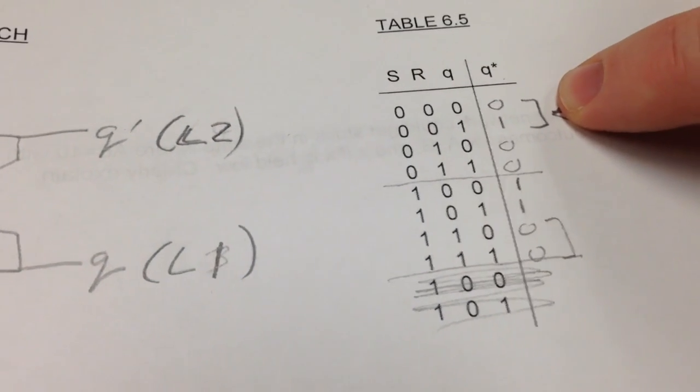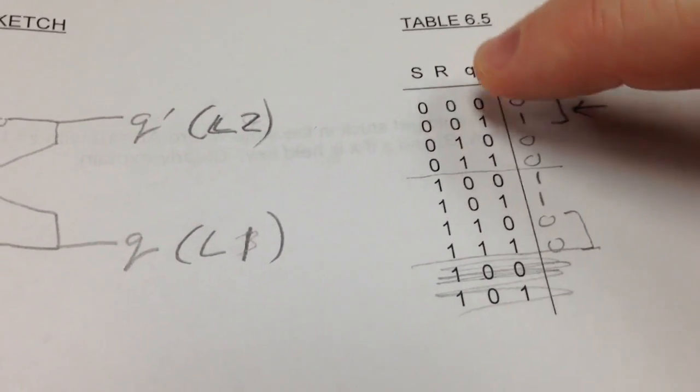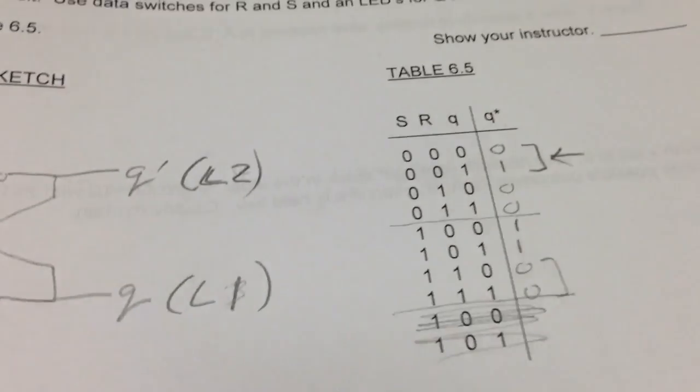So it's these two right here, which says if set and reset are down or off, then it remembers what it was last, connecting to the next state.